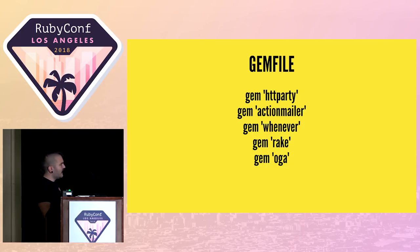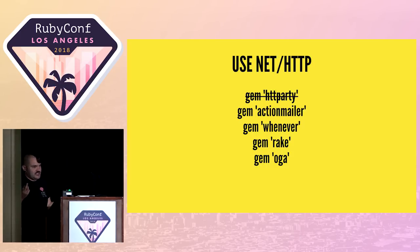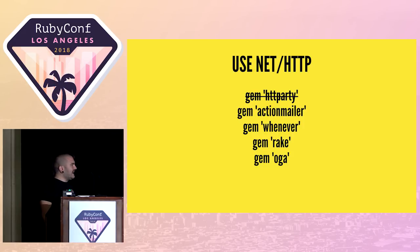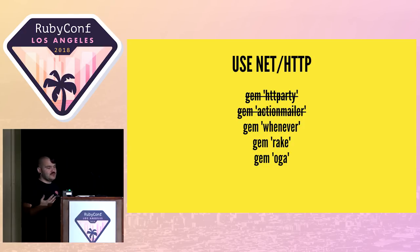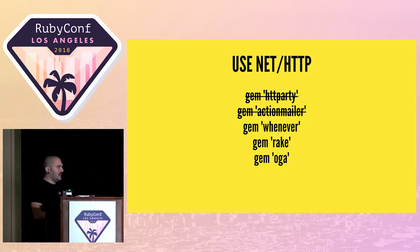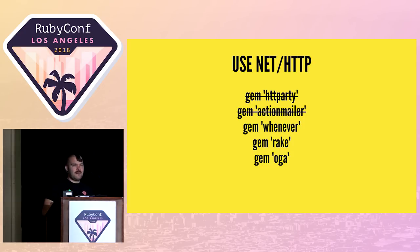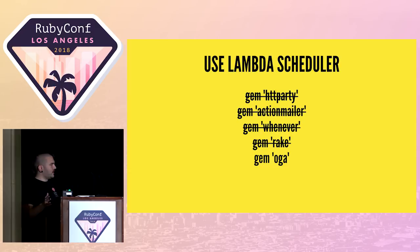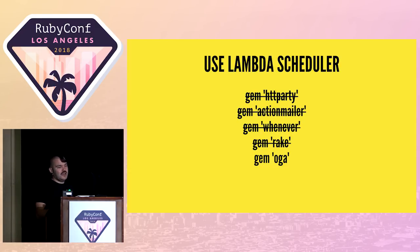The Gemfile looked like this. I easily got rid of HTTParty because I could just use Net::HTTP — it's good enough. I got rid of ActionMailer, again using Net::HTTP, because I used Mailgun, and Mailgun has an API you can just ping over HTTP. I got rid of Whenever and Rake because Lambda has its own scheduler. The only one I couldn't get rid of was the Oga gem.